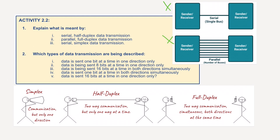So that's serial and parallel, but we've got three more terms to look at. First, simplex is basically communication, or data being sent only in one direction. In the example you can see here, a man with a megaphone is speaking but not receiving any information back. In simplex mode, the data transmits in one direction only from one system to another. The sending device can only send data and cannot receive it, and the receiving device can only receive data and cannot send it.